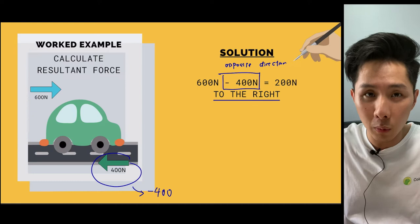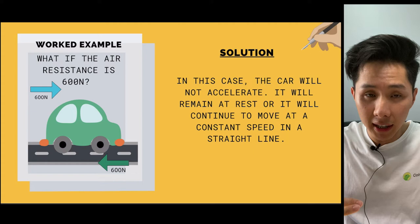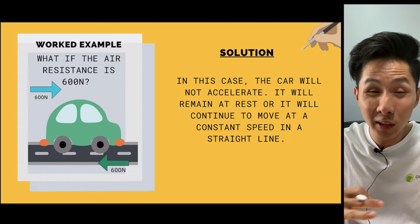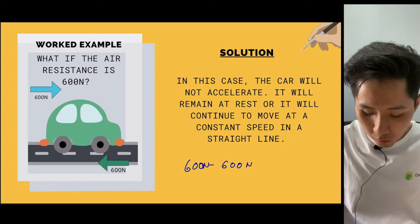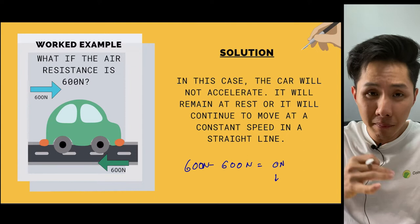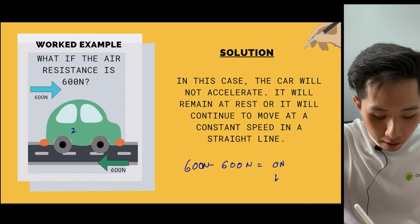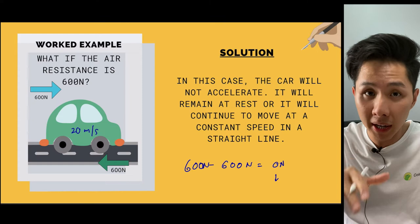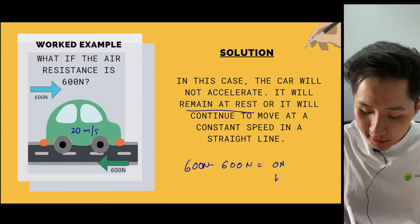In another case, the engine thrust is 600 Newton and the friction is also 600 Newton. Remembering Newton's first law, 600 minus 600 equals zero Newton — no resultant force. This doesn't mean the car will stop. If it's moving at 20 metres per second, it will remain at that speed. If the object is at rest it stays at rest; if moving, it remains at constant speed.